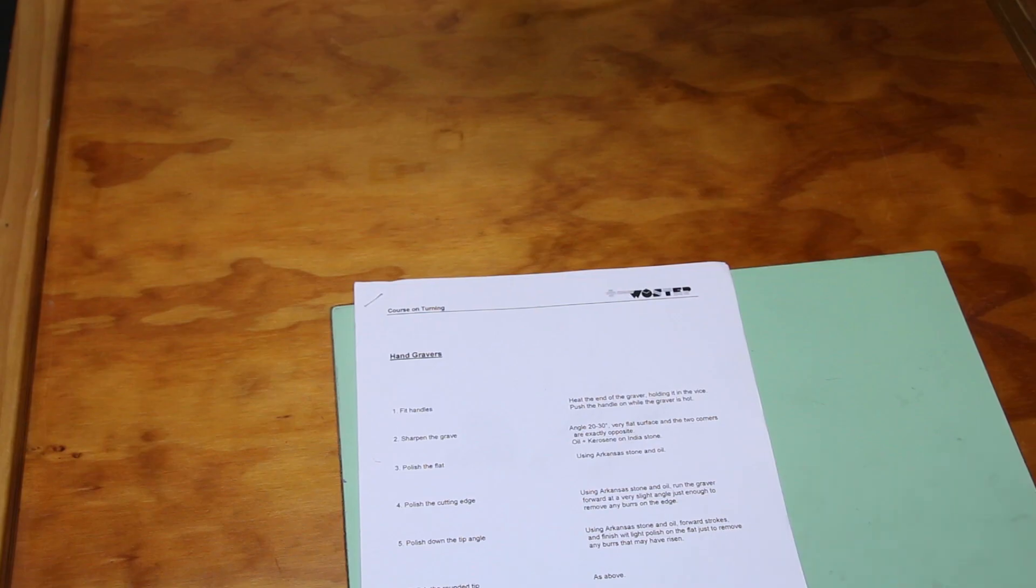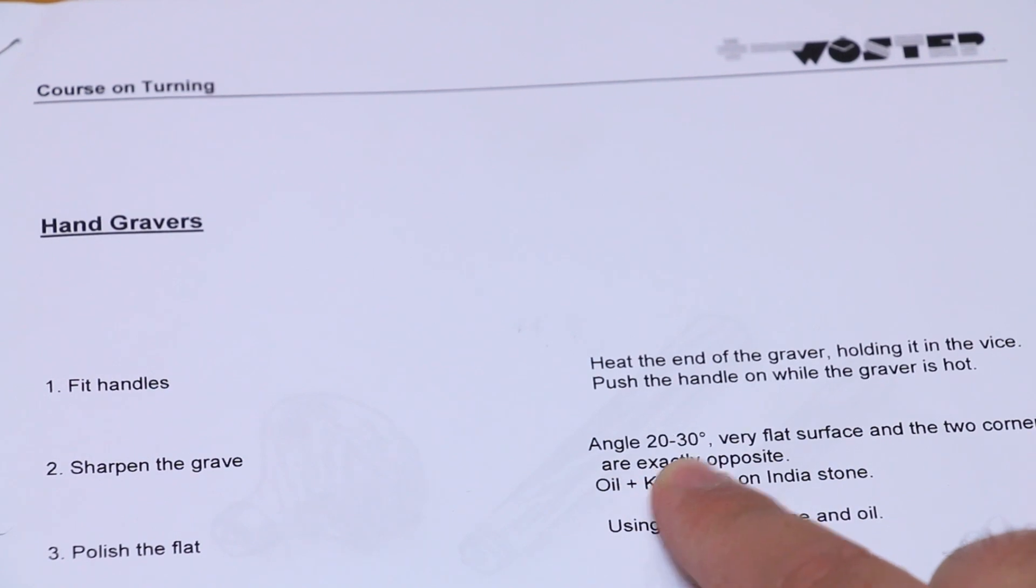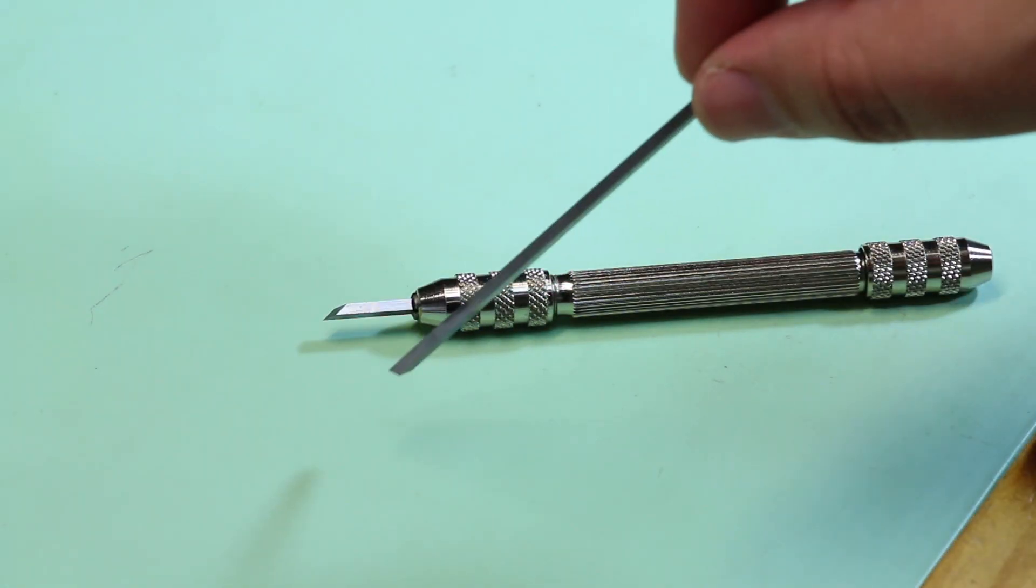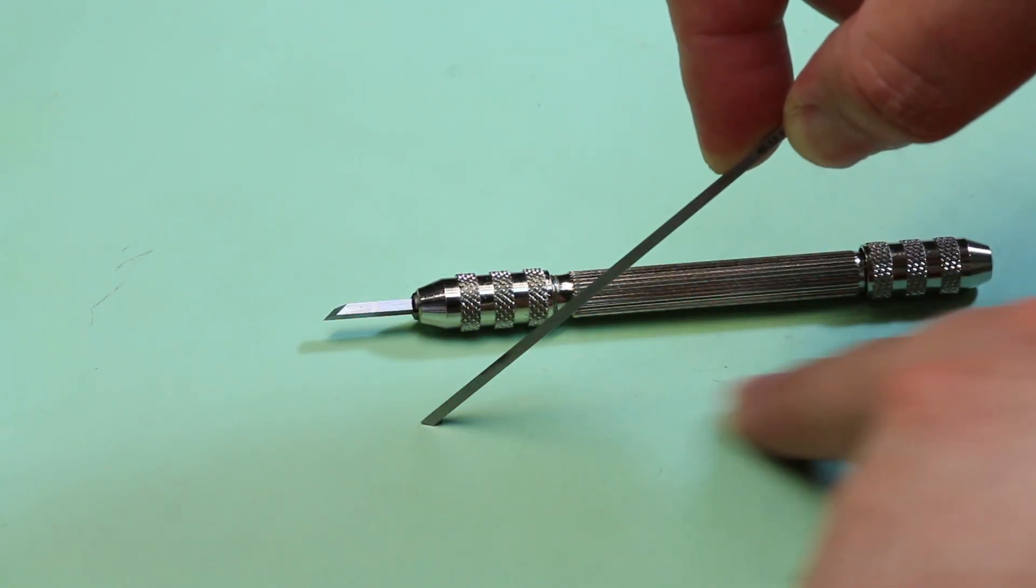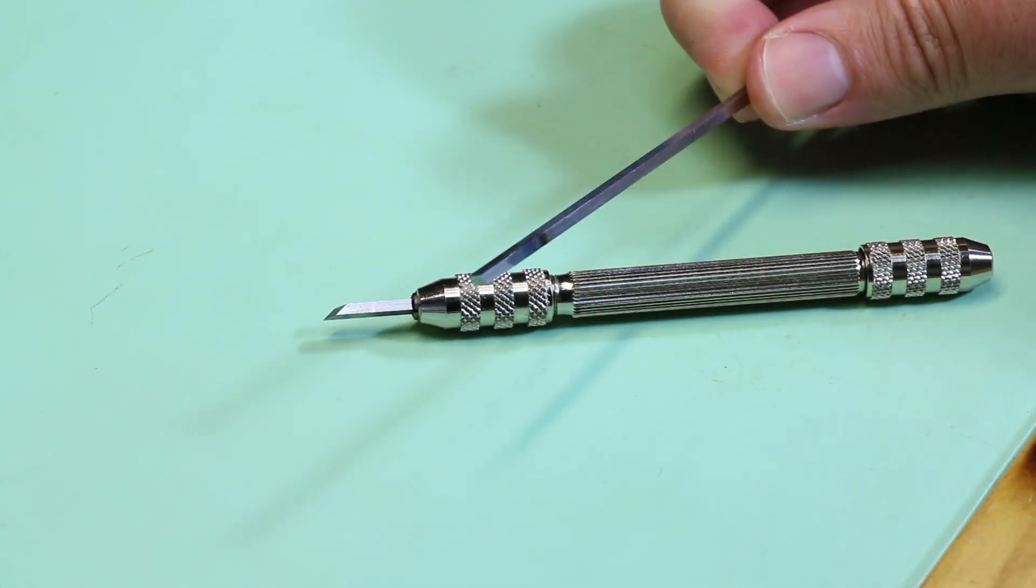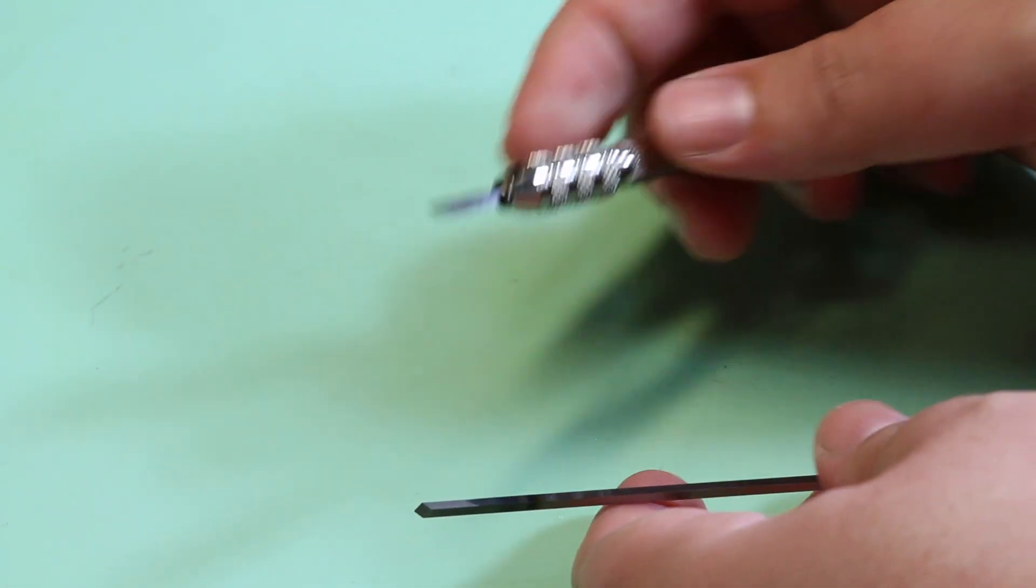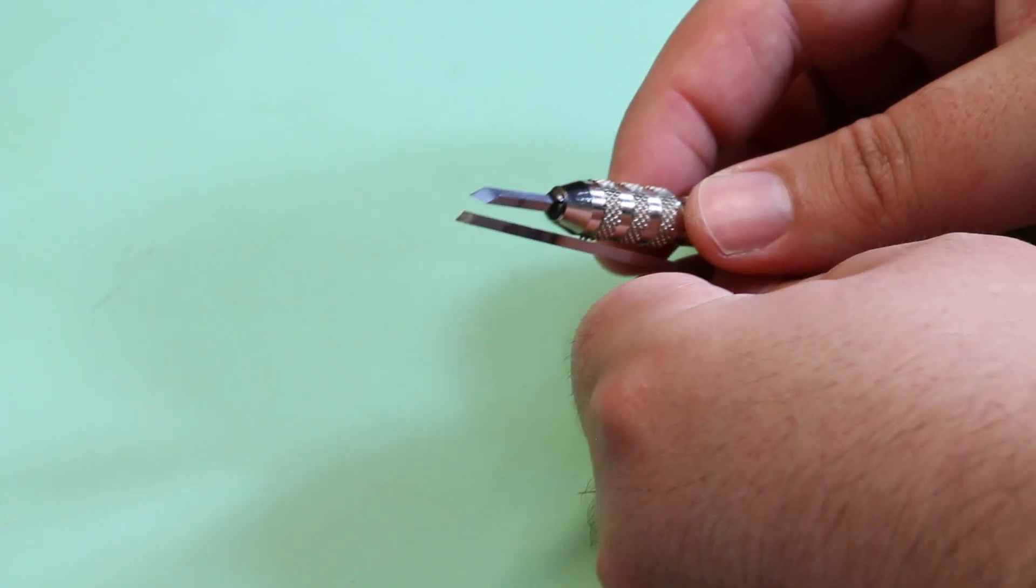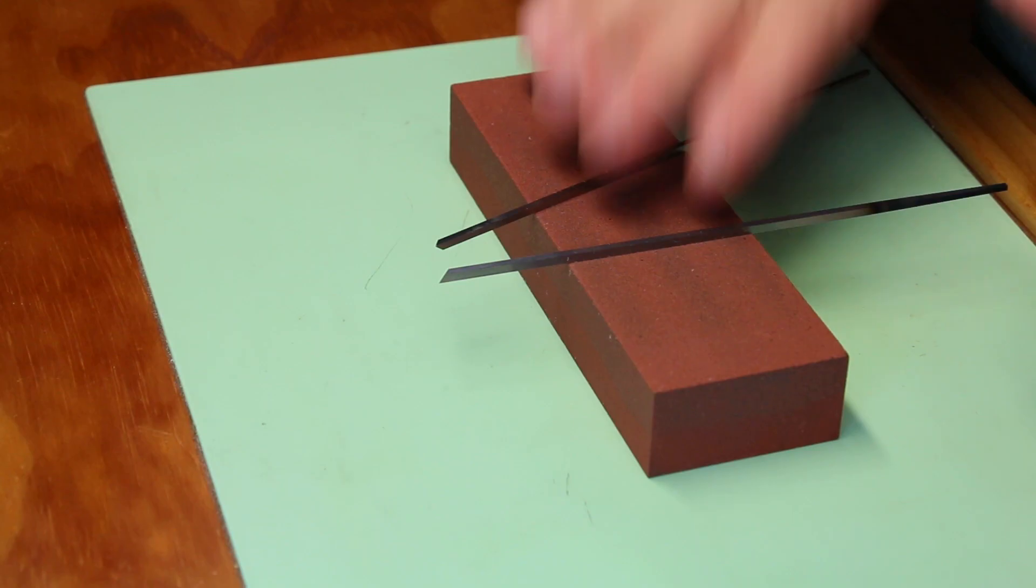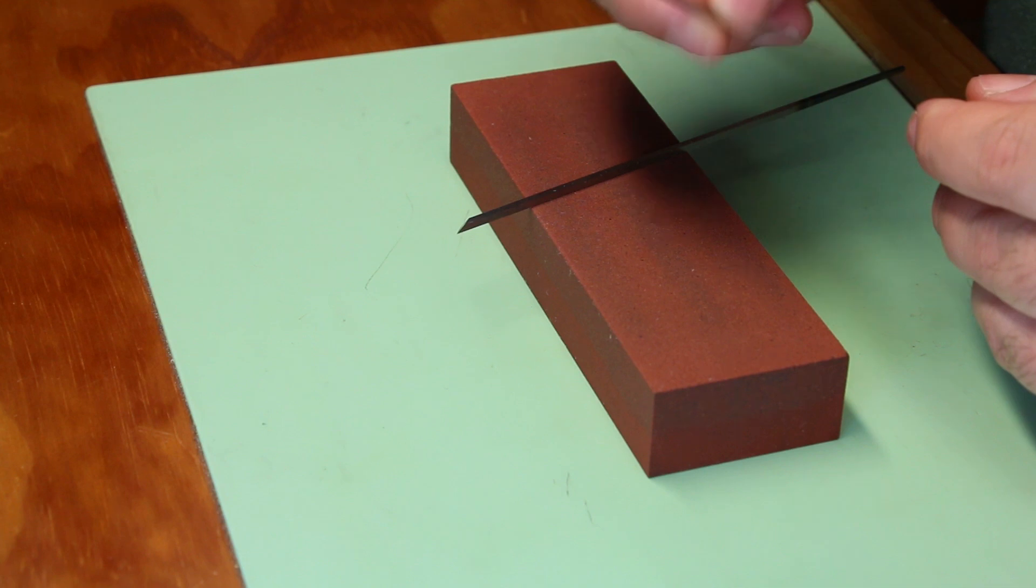If we take a look at the WOSTEP course on turning, it says that the graver needs to be at an angle of 20 to 30 degrees. You may find in other watchmaking books they describe a graver angle of up to 45 degrees. I like using a 45 degree tool when a substantial amount of material has to be removed. You can take quite aggressive cuts and the tip won't break as easily as a 20 degree tool. In saying that, a 20 degree tool is great when you have to get into tight shoulders or when undercutting. So the two tools that we're going to prepare today is a 45 degree tool and a tool somewhere between 20 to 30 degrees.